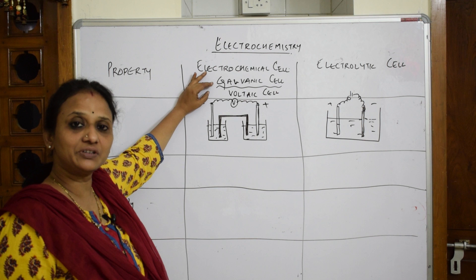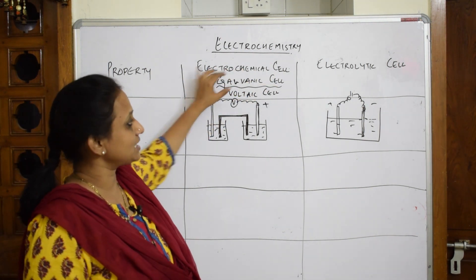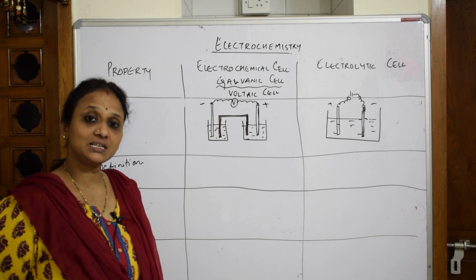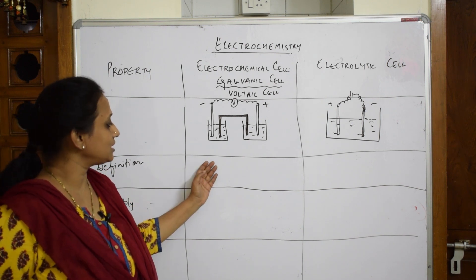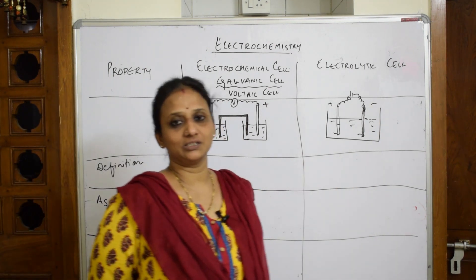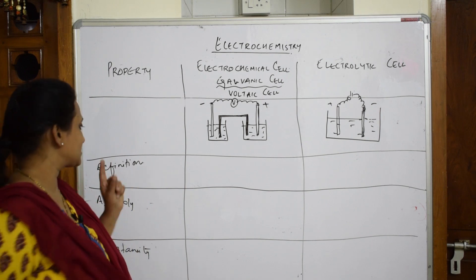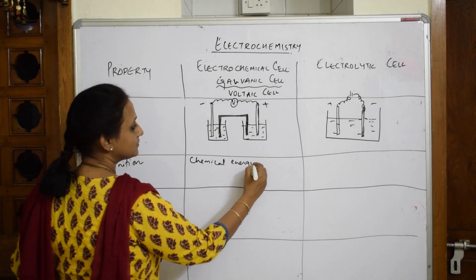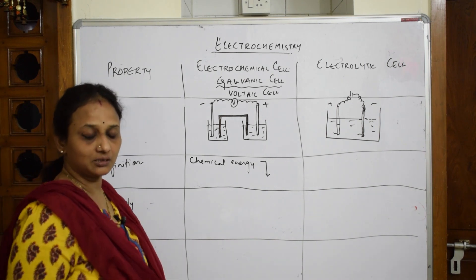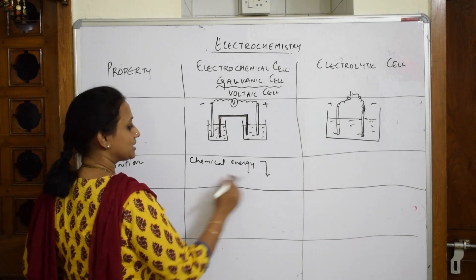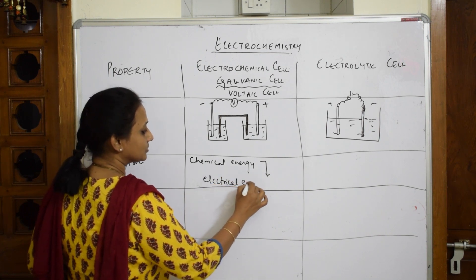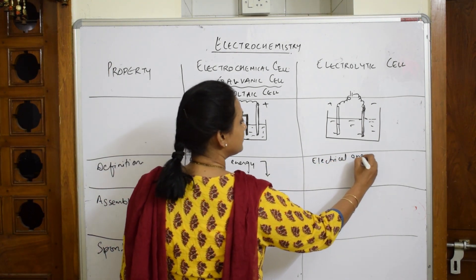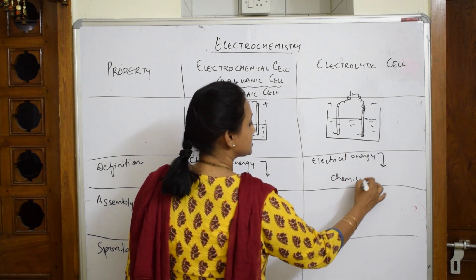In the exam, when they ask you the differences between galvanic cell, voltaic cell, or electrolytic cell, remember galvanic and voltaic are the same. Let's start with the definition. Electrochemical cells convert chemical energy to electrical energy. Electrolytic cells convert electrical energy to chemical energy — that's the simplest distinction here.